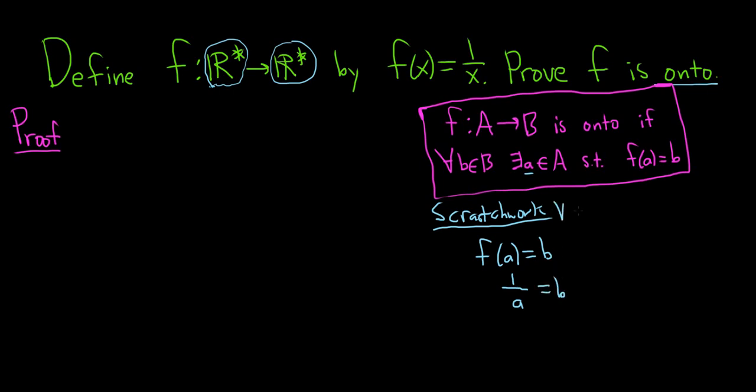So again, for all b in B, we have to find an a. So we set f of a equal to b, that's what it says in the definition. And so f of a is 1 over a, and that's equal to b. So to solve for a, we can multiply both sides by a. So we get 1 equals b times a, and then we divide by b, so we get a equals 1 over b.